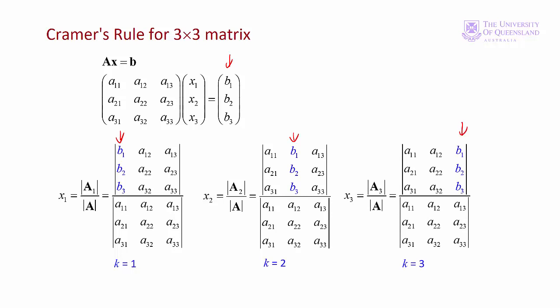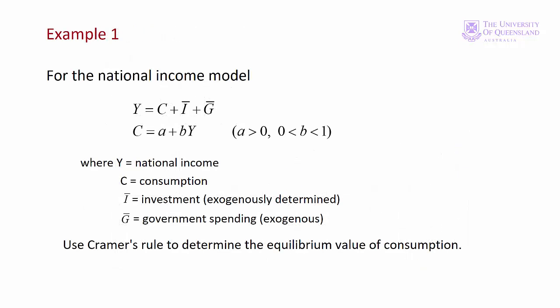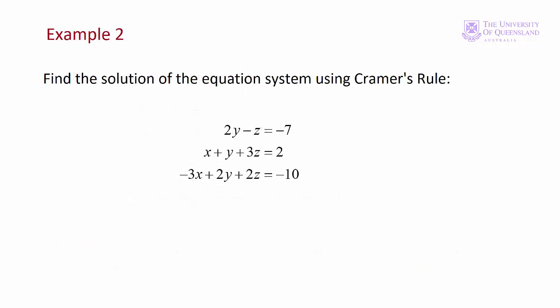As mentioned earlier, we usually use Cramer's rule when we want to solve for just one of the variables. Now we'll apply Cramer's rule to a couple of examples: first, a simple macroeconomic model with two equations and two unknowns, and then we'll look at a system of three equations.